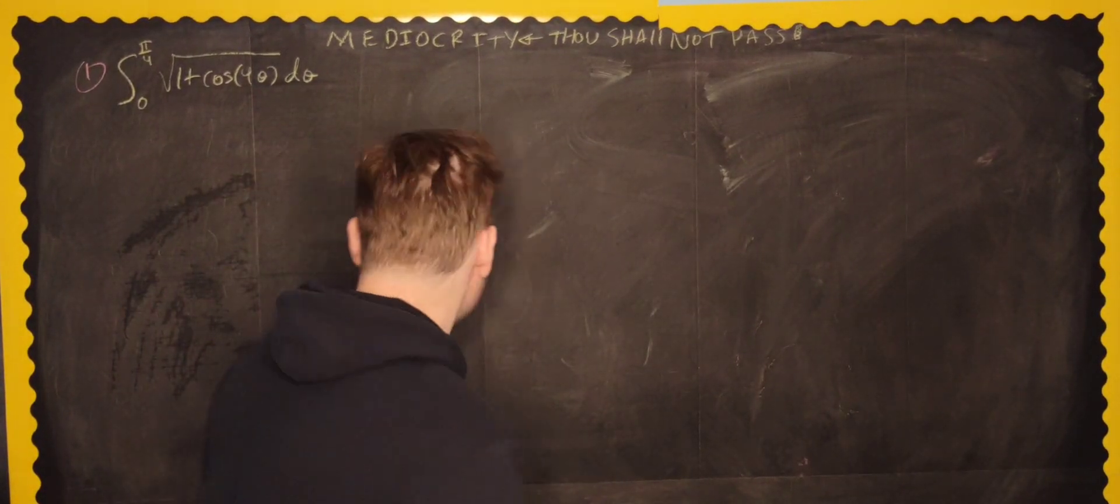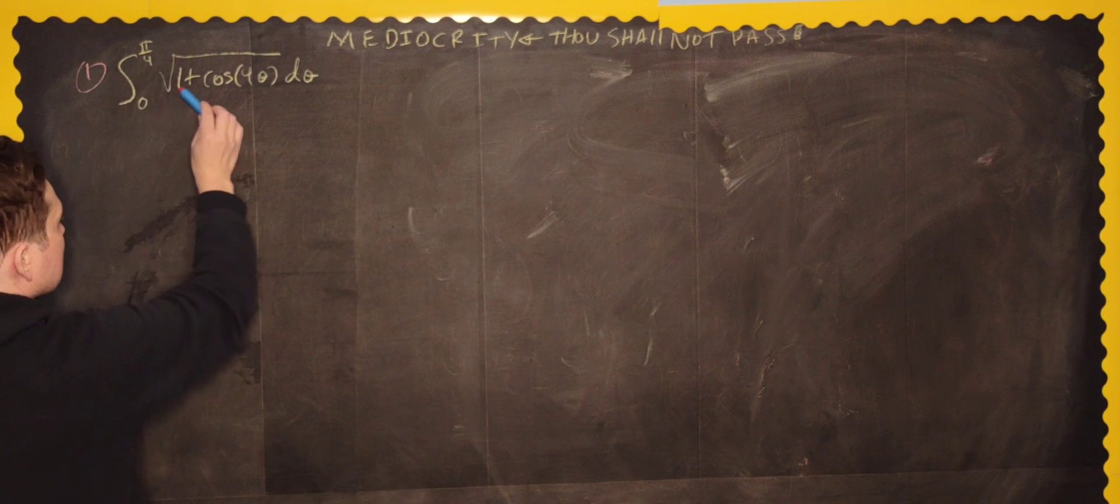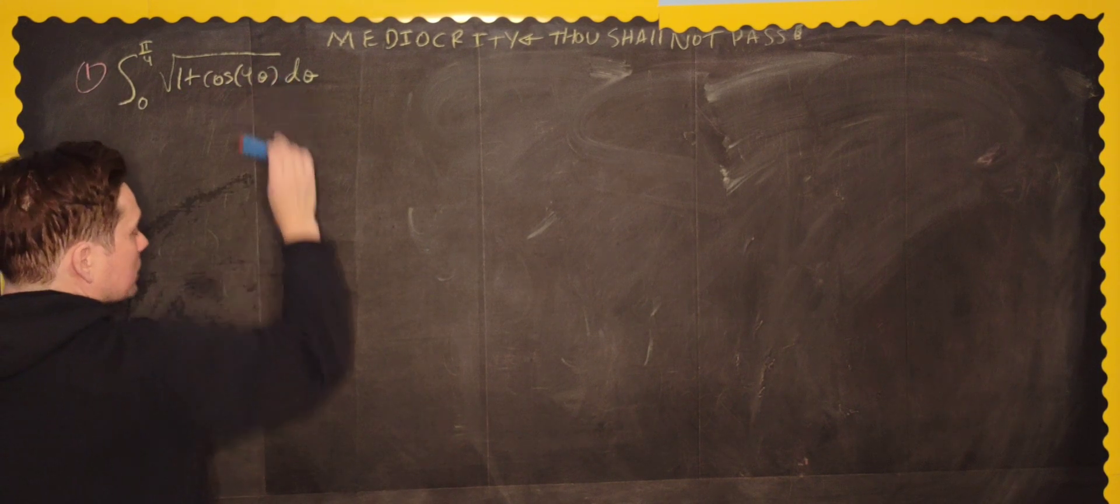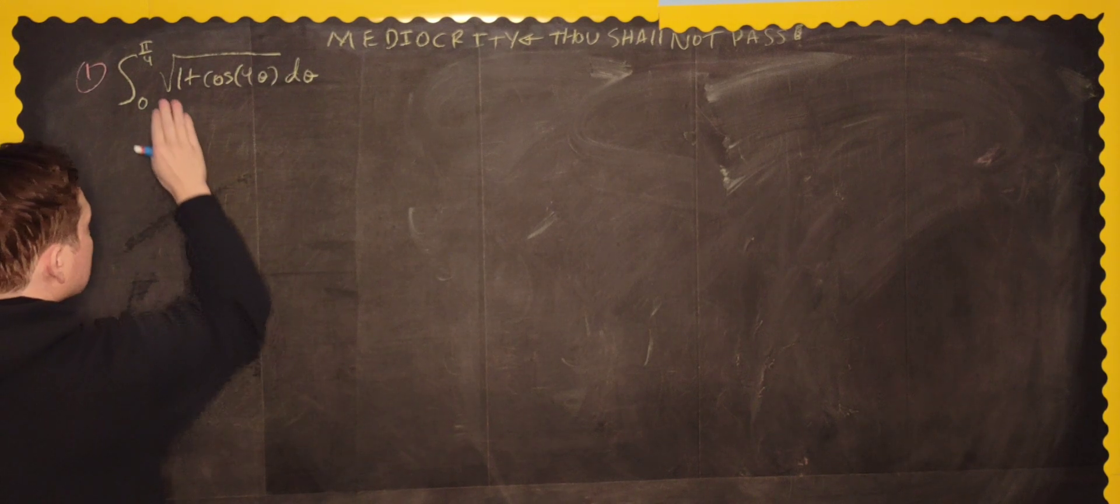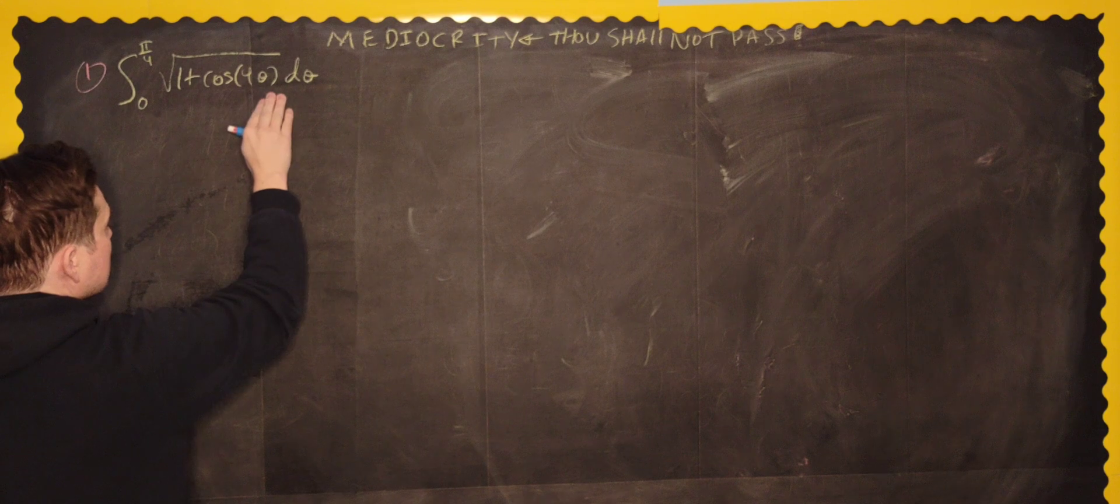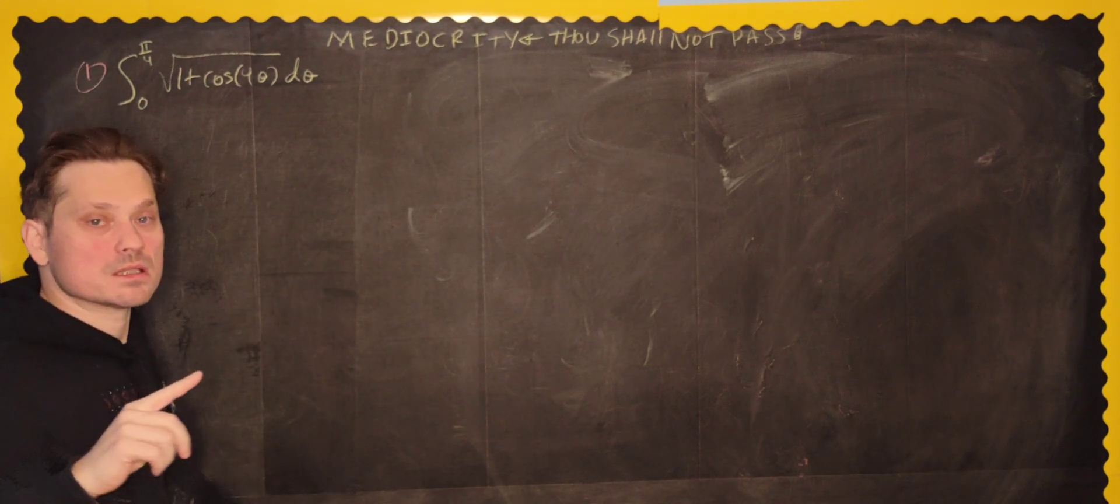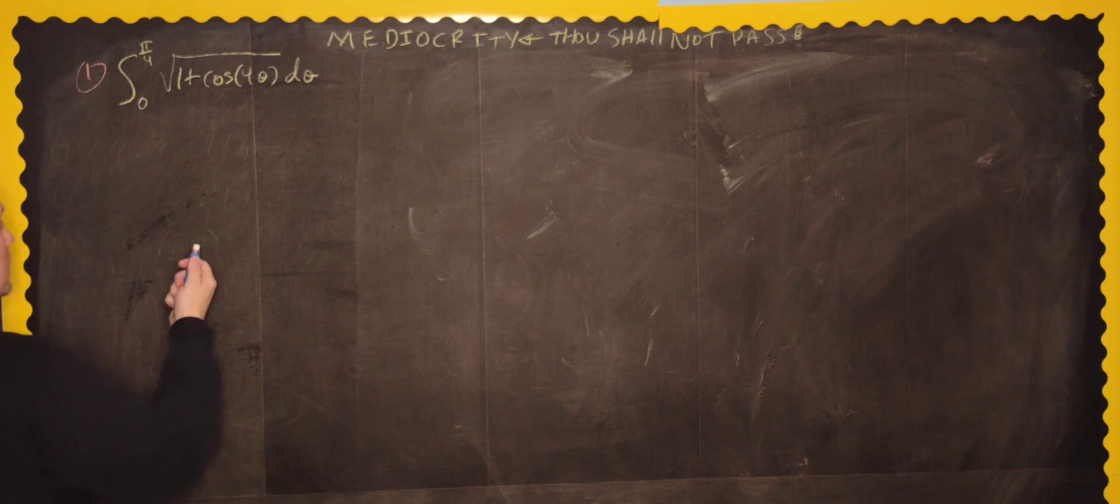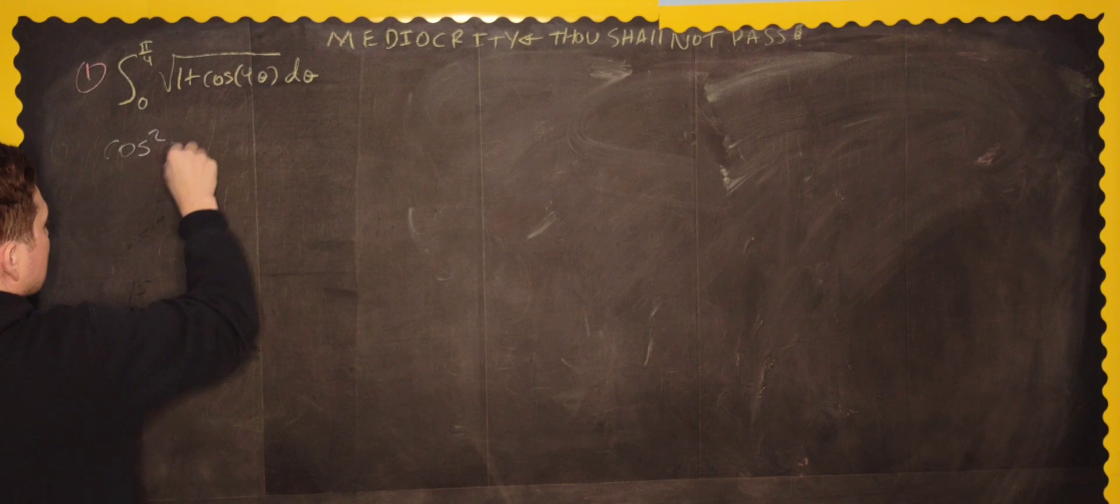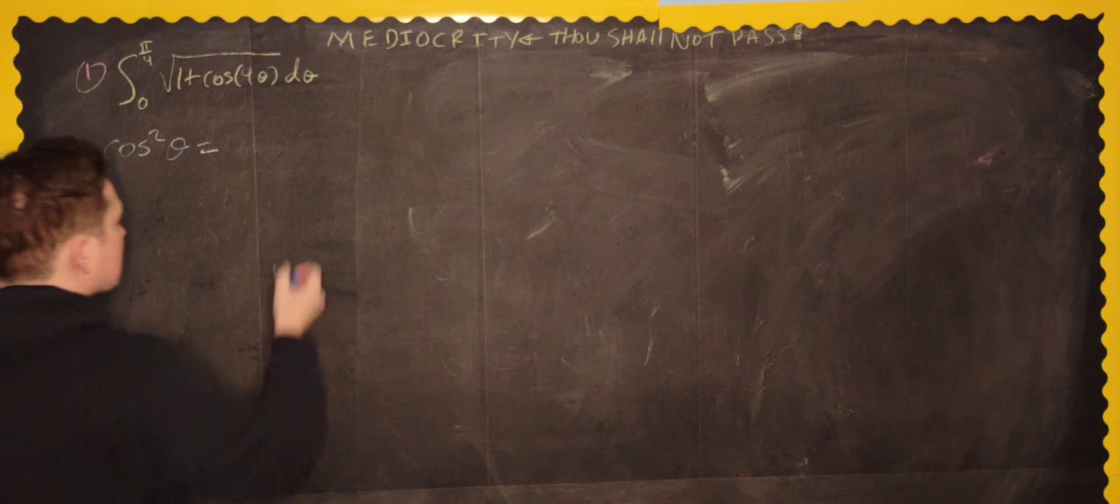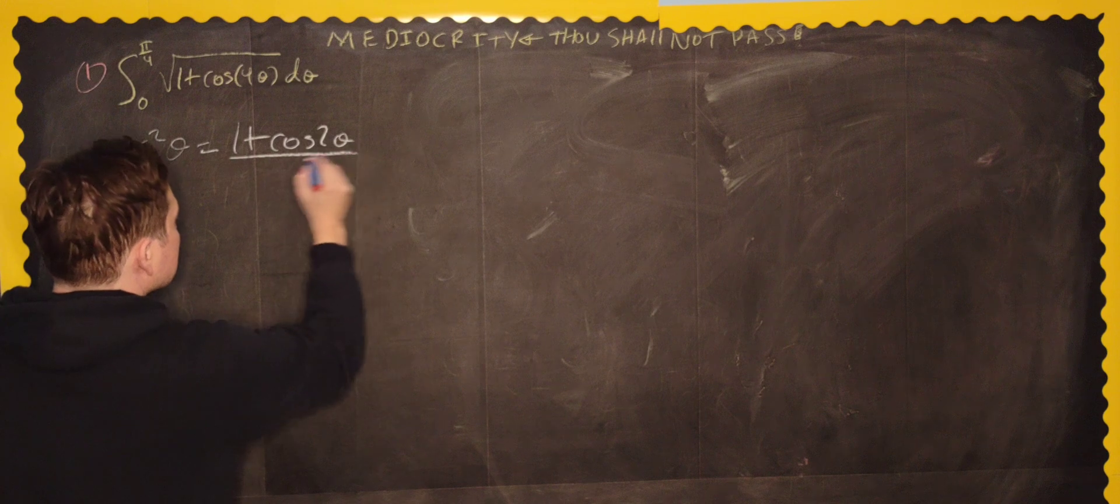Okay, so we have the following here. Integral from 0 to pi over 4 of the root of 1 plus cosine 4 theta and then d theta. So how do we do this? Well, first of all, we get the root symbol, but then we have this expression. We cannot just take the root of this expression under the root symbol easily. So what do we have to do? We have to do something along these lines, right? We have to remember that cosine squared of theta is equivalent to writing 1 plus cosine of 2 theta divided by 2.